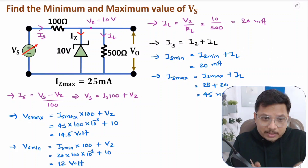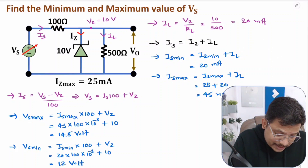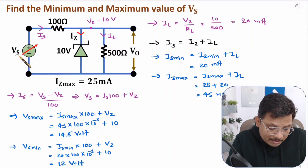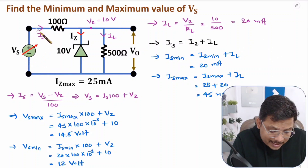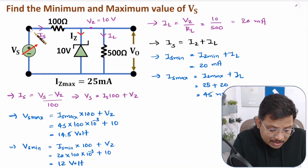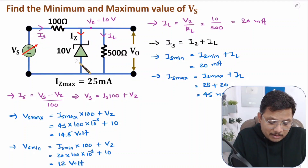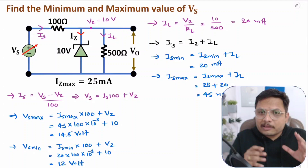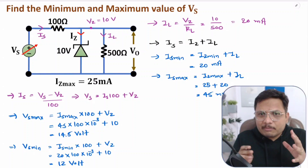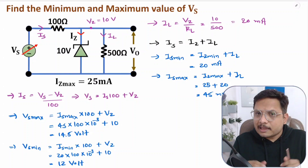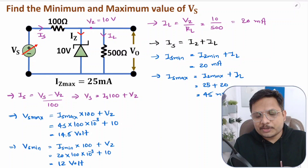You need to understand how the variation is happening. As Vs is minimum, at that time Is will be minimum. As Is is minimum, at that time Iz is minimum. In sequence, you substitute all the values and then you get the answers. I hope you have understood this. Let us move on to the third very interesting question.